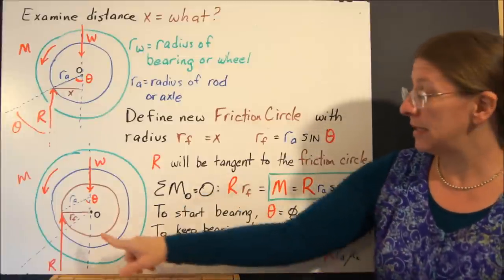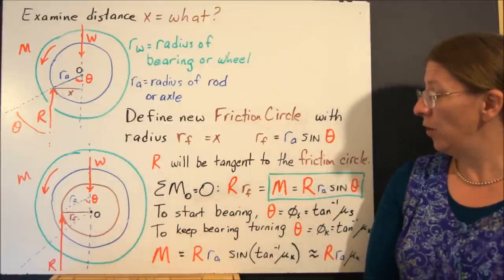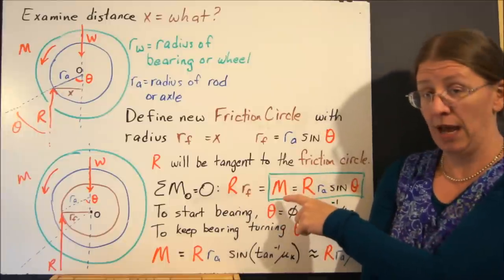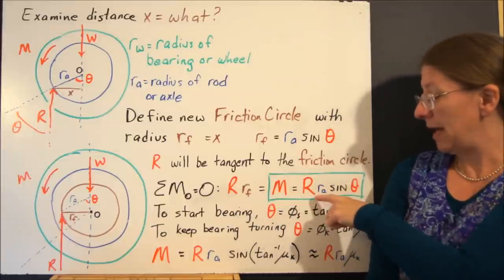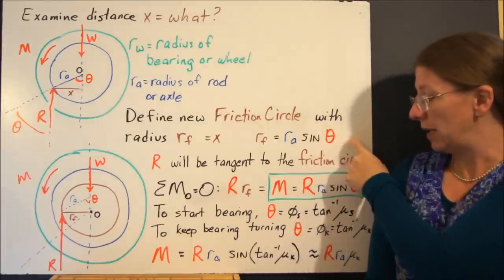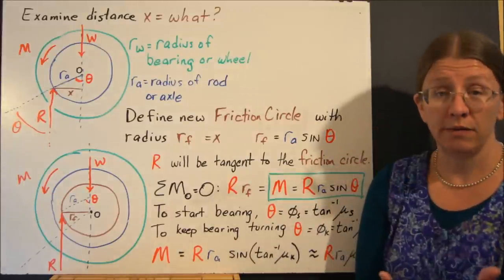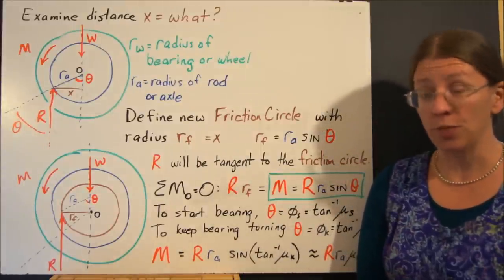When I take the sum of the moments down here at the center of the circle O, I can tell you that R times that perpendicular distance is equal to M. M is then R times this radius, Ra sine theta. What is theta? Well, this is where you end up with the friction part.